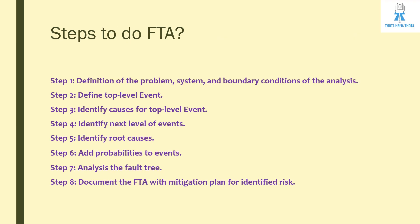The steps to do fault tree analysis are: first, define the problem, system, and boundary conditions of the analysis. Then write down the top-level event and identify its causes, writing the next-level intermediate or basic events. Next, identify root causes for the intermediate events and determine the probability of occurrence of these events — both top and intermediate. Finally, document the entire fault tree analysis along with a mitigation plan for the identified risks.